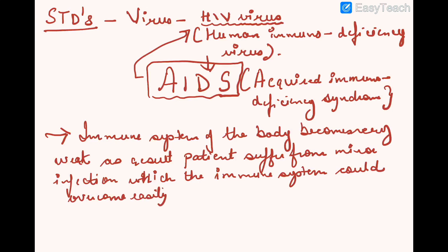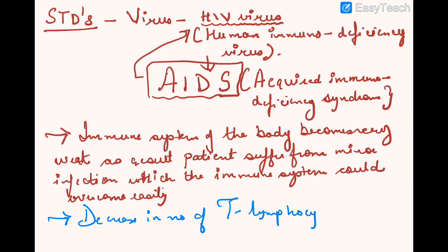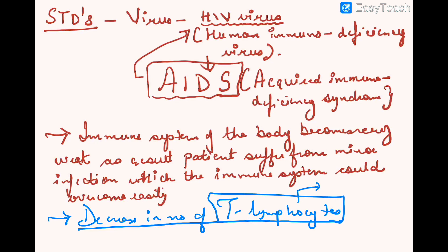The immune system becomes weak because there is a decrease in the number of T lymphocytes in the body. Since T lymphocytes produce antibodies or help B lymphocytes produce antibodies, there is a reduction in immunity and the immune system becomes weak.